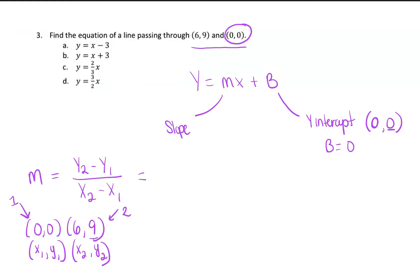So y2 would be 9. And then y1 is 0. So 9 minus 0. Then we have x2, which is 6, minus x1, which is 0. So 9 minus 0 is 9. And 6 minus 0 is 6. So our slope is 9 over 6.